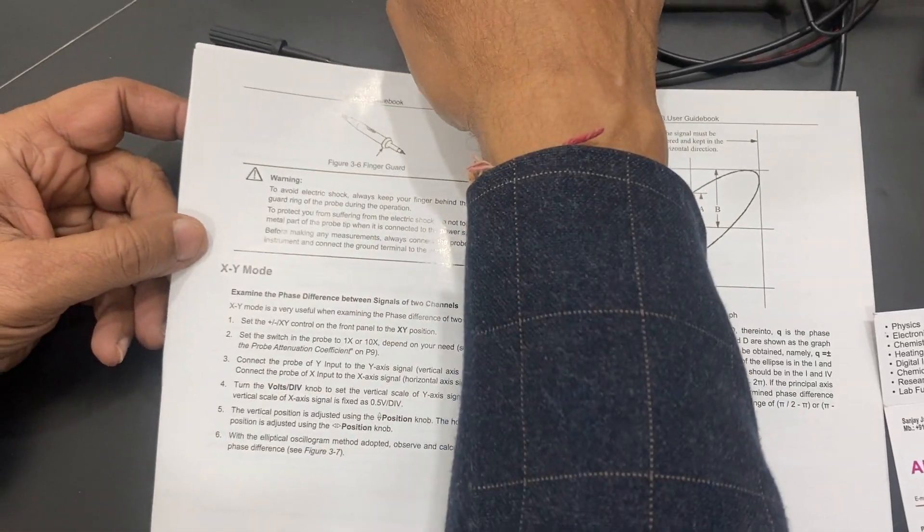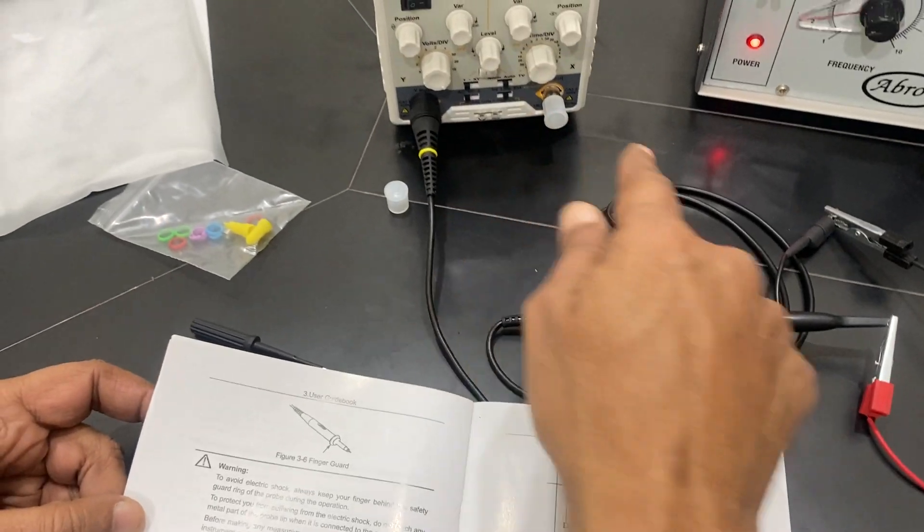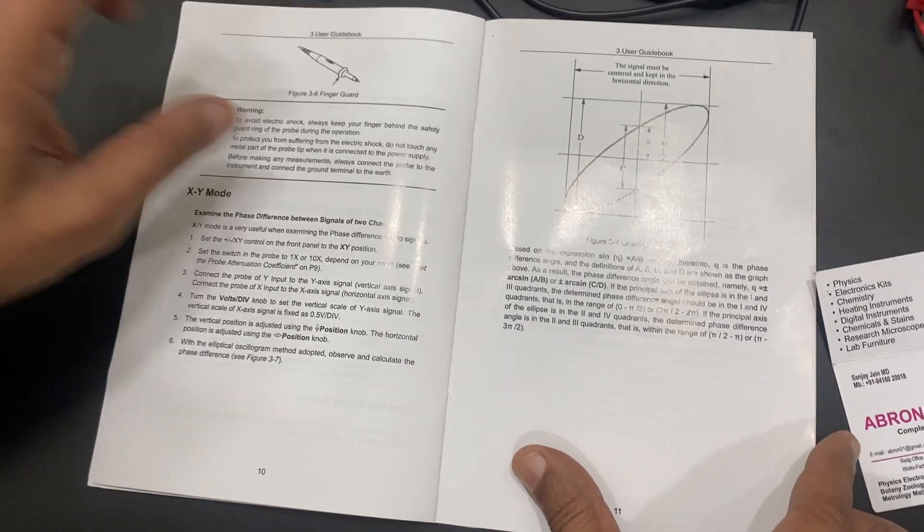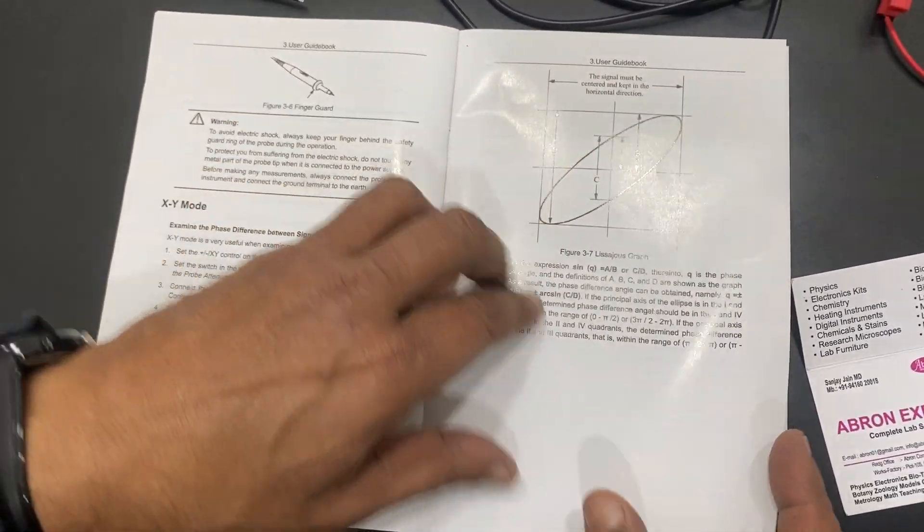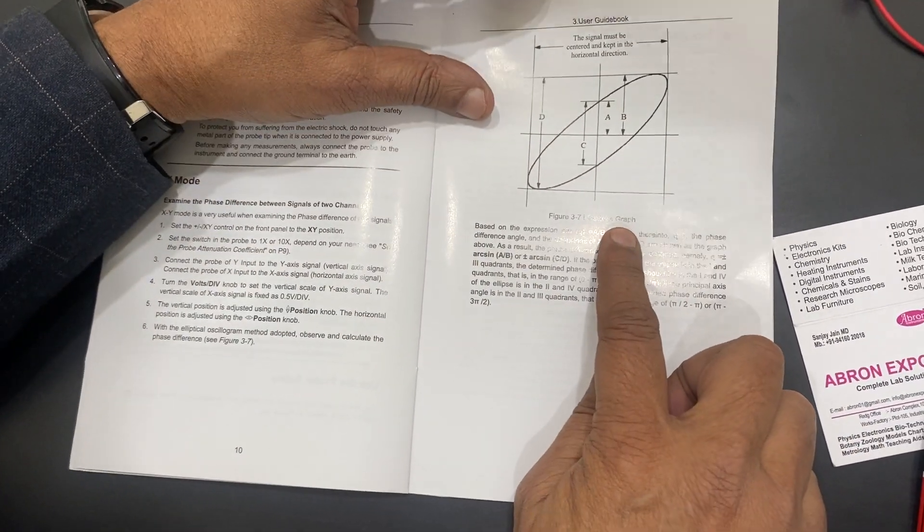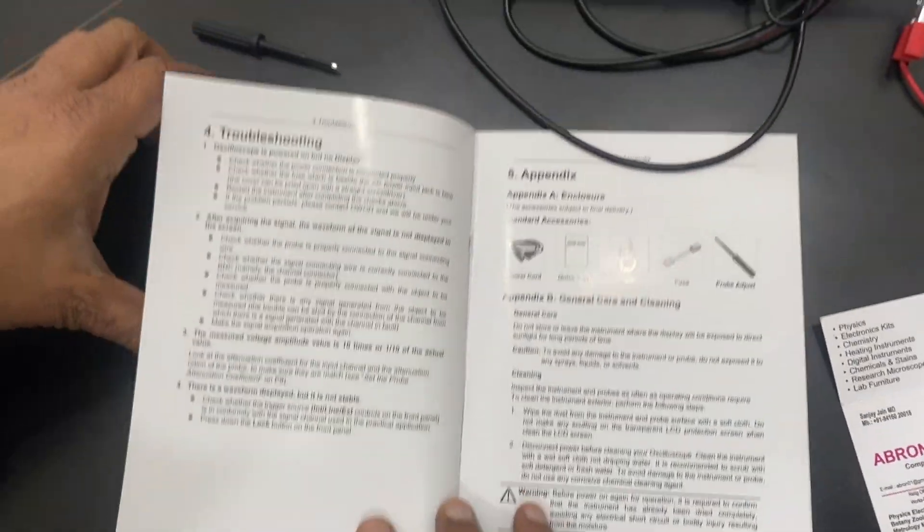They say X mode, Y mode. If you have to check it on the X mode and Y mode for two signals, you can see the Lissajous figure, a two signal giving two signals, you can have.